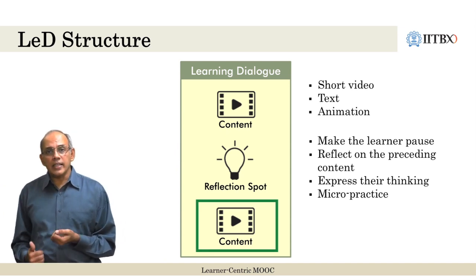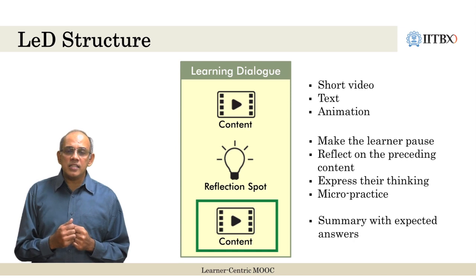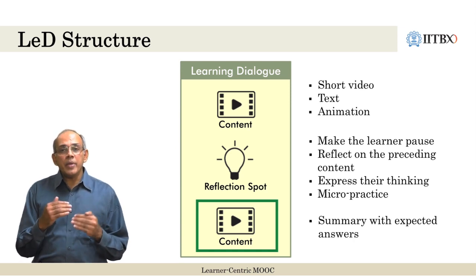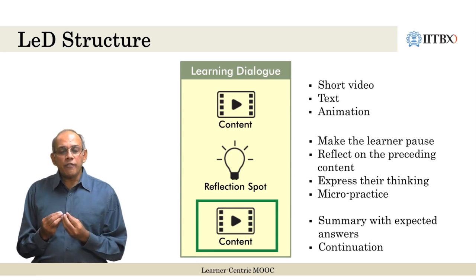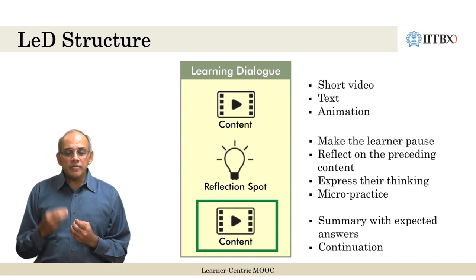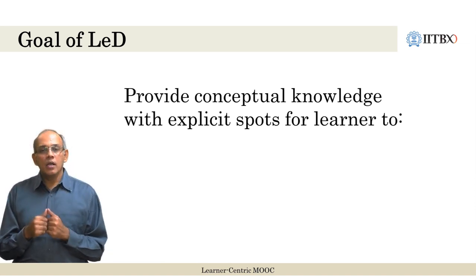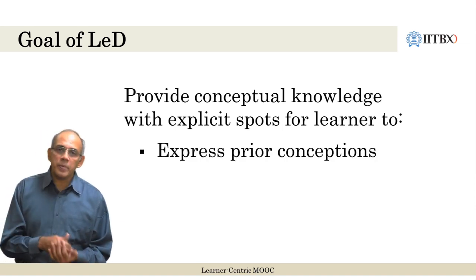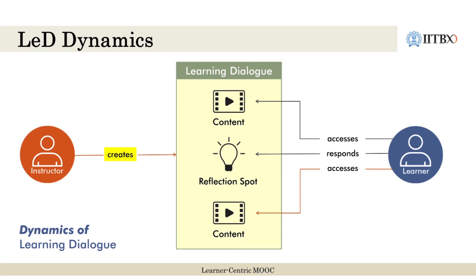A reflection spot is followed by content. This content may be a summary of the expected answers from the reflection spot or may continue further from it. The key idea is to have the reflection spot question connected to the content immediately preceding it as well as to the content immediately following it. The goal of a learning dialogue is to provide conceptual knowledge along with explicit spots for learners to express their conceptions, do micro-practice, and reflect on what they have learned. The instructor does this by creating a learning dialogue with content and reflection spots that are related to each other.